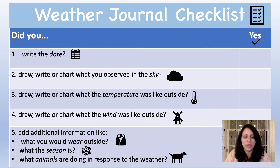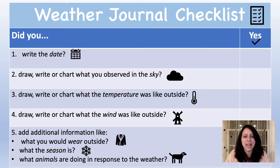So here are the questions for number five. Did you add additional information like what you would wear outside? Or what the season is? Or what animals are doing in response to the weather? Next to each question, there's another column and the heading of that column says yes and has a check mark. And if you did any of those things, like write the date or write what the temperature was like, you can give yourself a check on your work. We're going to go through this checklist one item at a time. Let's begin.